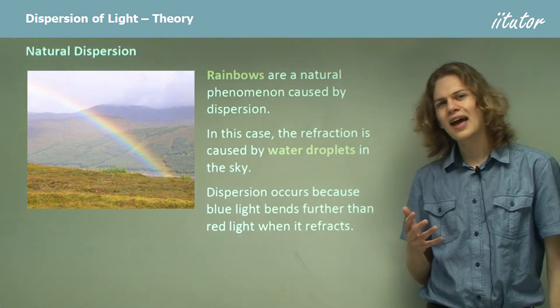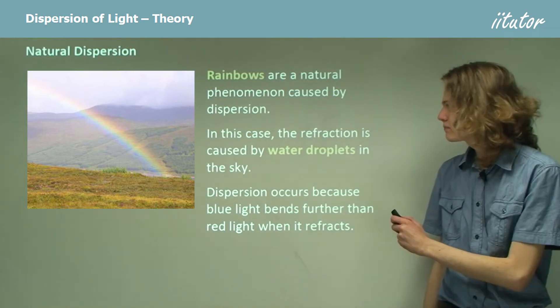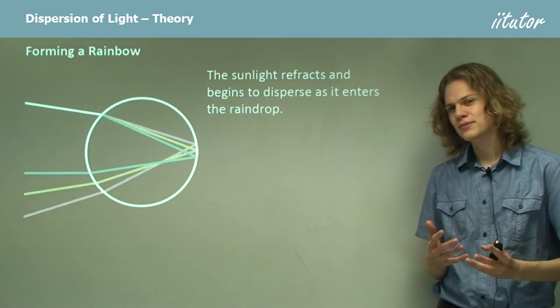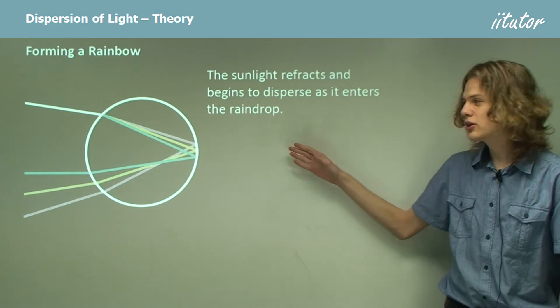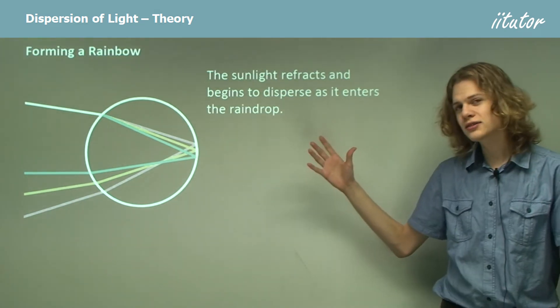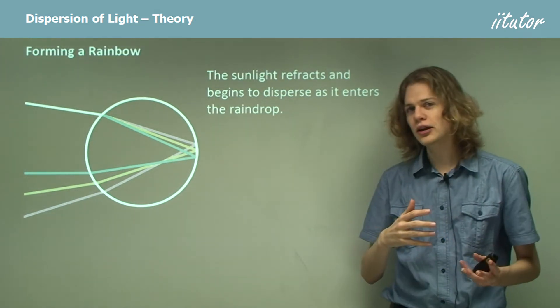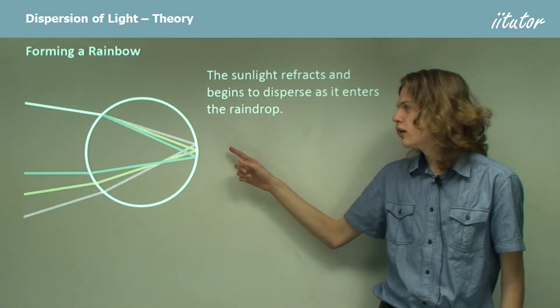So how exactly does the light behave as it enters the water? Well, it looks something like this. We can see that the sunlight coming in from the left of the diagram will refract and begin to disperse when it comes into the raindrop. The blue light will bend a little bit more than the red light.